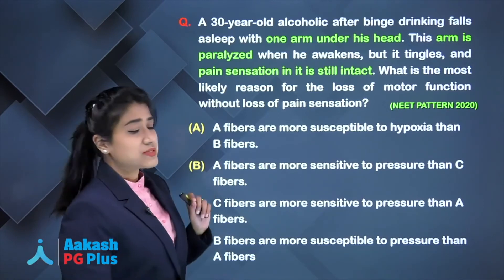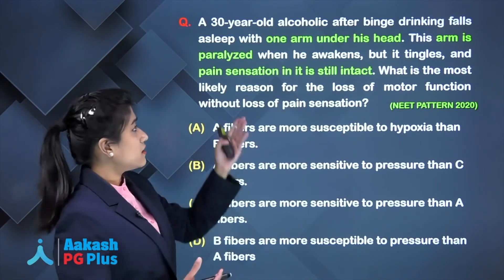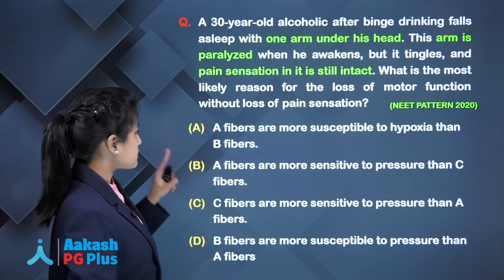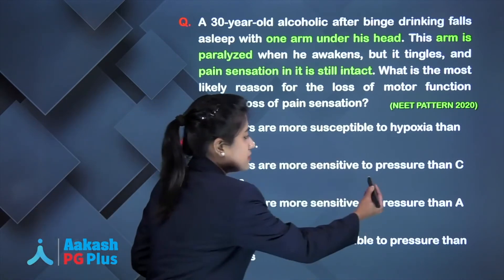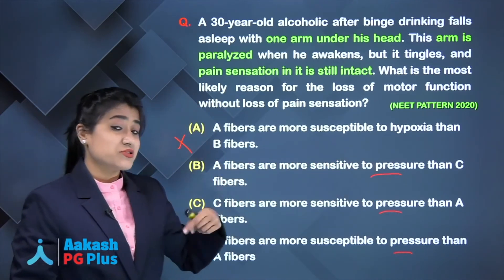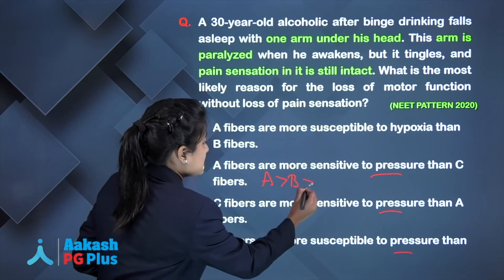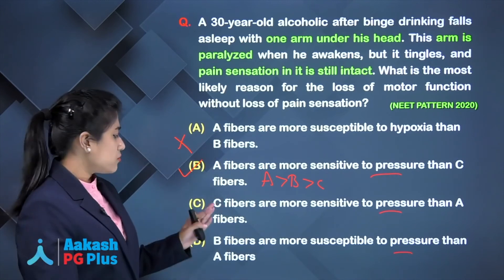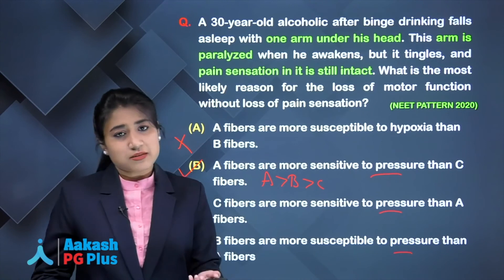Back to the clinical question: one arm is under the head, the arm is paralyzed, but pain sensation is still intact. The clue is pressure on the nerve. The option saying 'A fibers are more sensitive to pressure than C fibers' is correct, since A > B > C for pressure susceptibility. Options saying C > A or B > A are wrong. The answer is B.